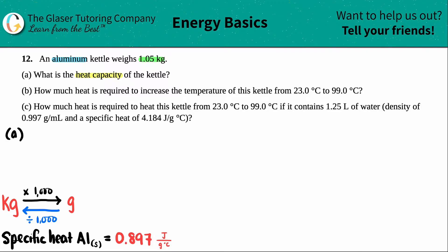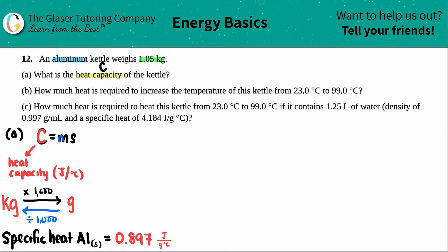Heat capacity is noted as uppercase C, and the formula is C equals m times s — lowercase m times lowercase s. Uppercase C is the heat capacity, in joules per degree Celsius. The m stands for the mass, in grams. The s represents the specific heat of the substance, in joules per gram times Celsius.